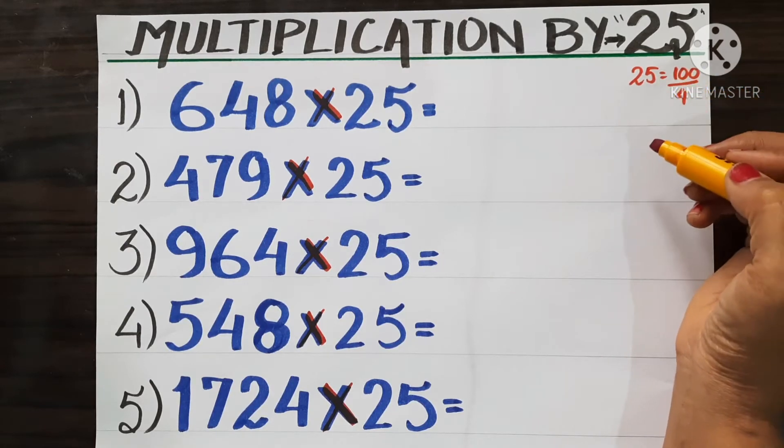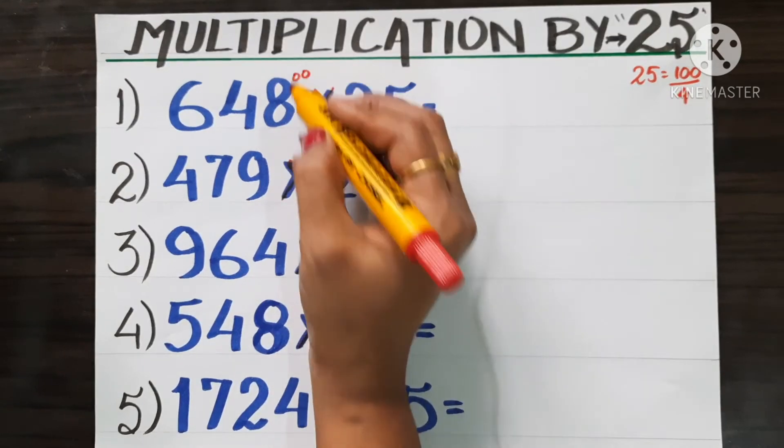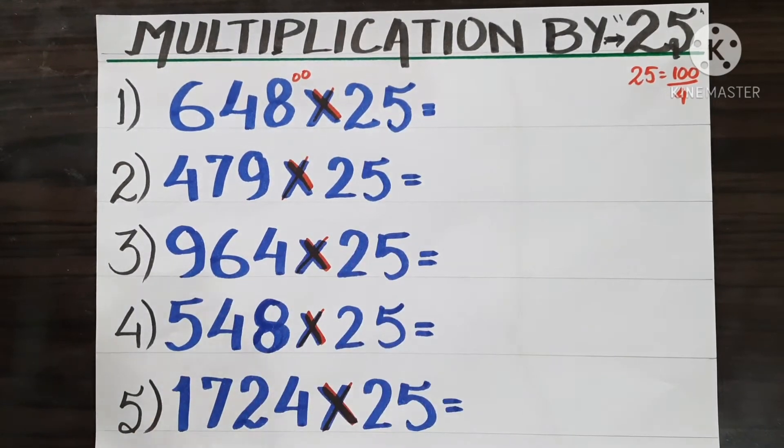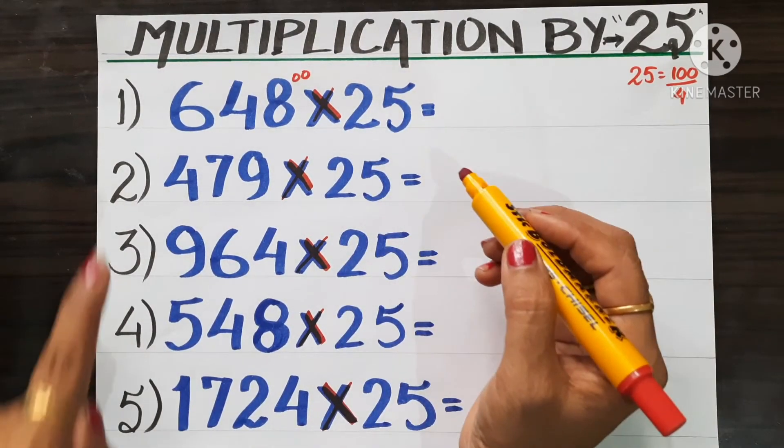So here we will put these two zeros, and then in place of multiplying with two steps, we will divide with one step and the division will take place with 4. So 4 ones are 4, now 2 is remaining. 2, 4, 24. 4 sixes are 24.